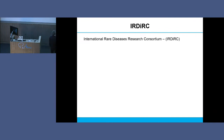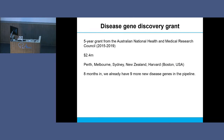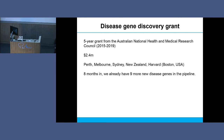ERDIRK is the International Rare Disease Research Consortium, and its number one goal is to know all the genes for human Mendelian monogenic disorders by 2020. The first human disease gene to be found by the new genetics was in 1987 - so we had one in 1987, and now we're talking about knowing them all by 2020, which is an extraordinary achievement for the human race. We were awarded a $2.5 million grant by the Australian National Health and Medical Research Council to keep looking for these genetic causes of muscle and other disorders. Eight months into the project, we've got nine more new disease genes in the pipeline. I'm getting pretty confident the ERDIRK goal of knowing all these disease genes by 2020 might actually be achieved.